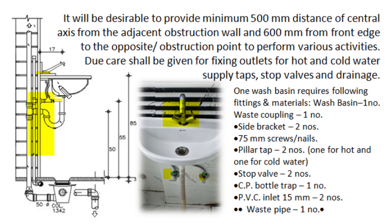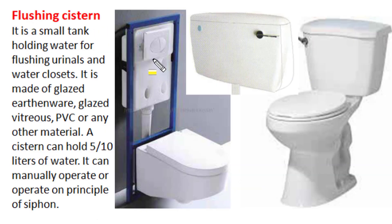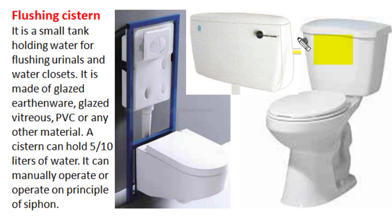For one wash basin installation, the required fittings include: one wash basin waste coupling, two side brackets with 75 mm screws and nails, two pillar taps (one hot, one cold) with flexible supply pipes controlled by two stop valves, and one PVC inlet with a waste pipe attached to a CP bottle trap. The flushing cistern — made of glazed earthenware, vitreous ceramic, PVC, or other material — holds 5 to 10 litres and can be operated manually by lever or on siphon principle by push buttons.